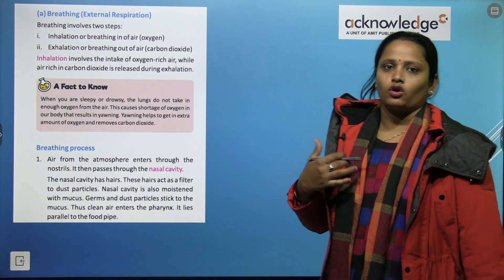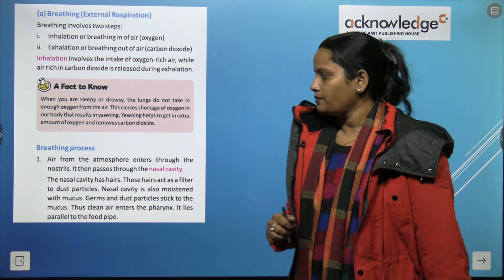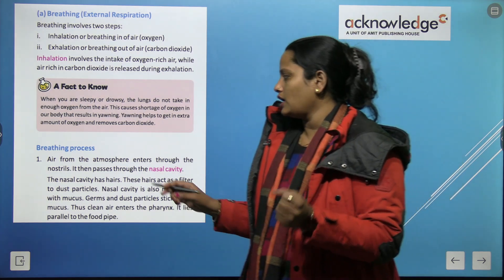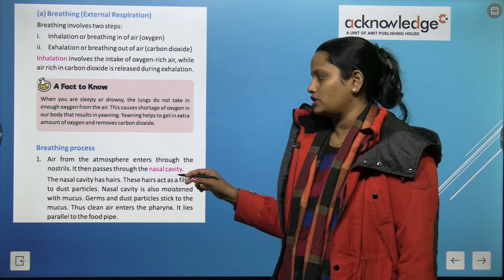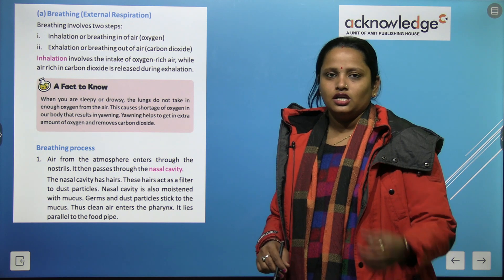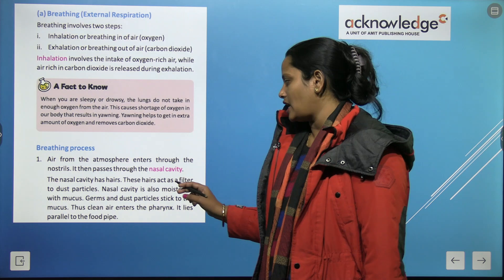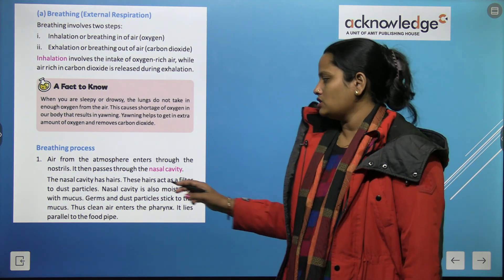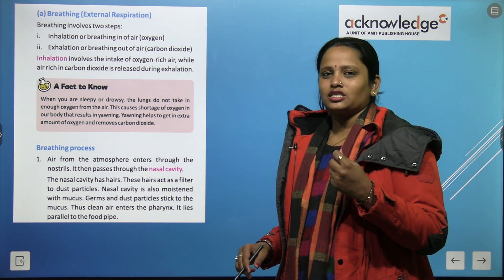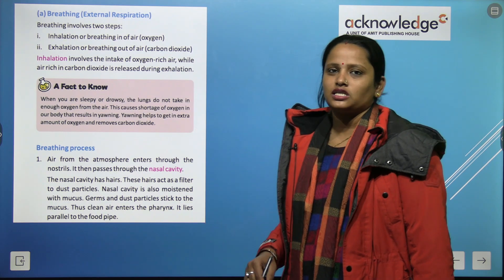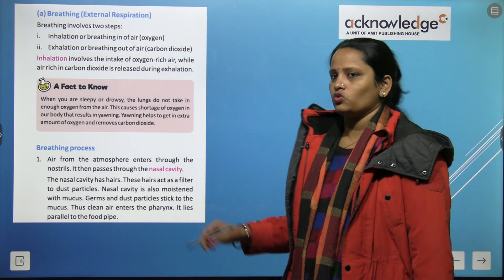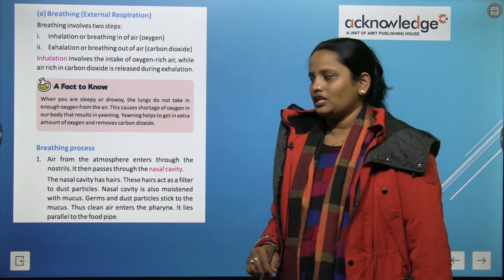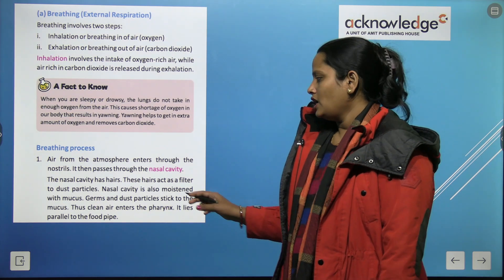Now the breathing process: air from the atmosphere enters through the nostrils and is processed through the nasal cavity. The nasal cavity has hairs that act as filters trapping dust particles. The nasal cavity is also moistened with mucus — a sticky substance — to which germs and dust particles stick, so that clean air enters further into the body. The trachea lies parallel to the food pipe.